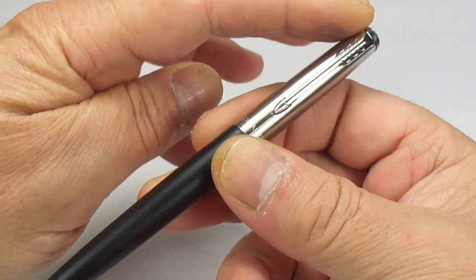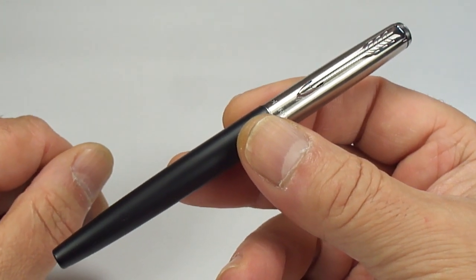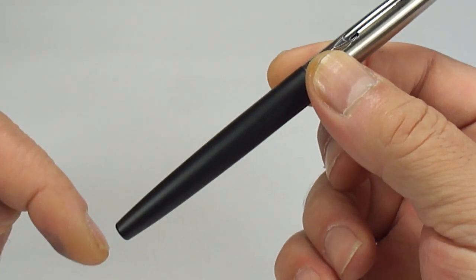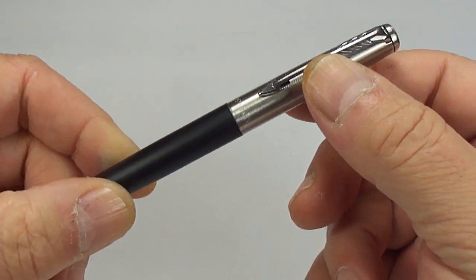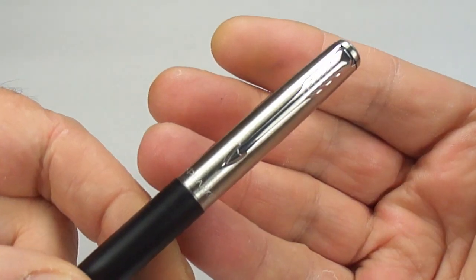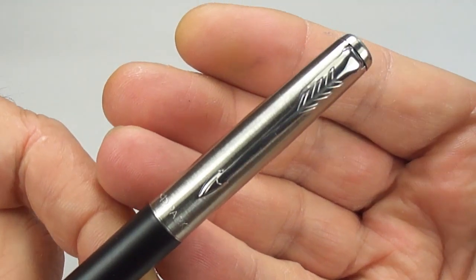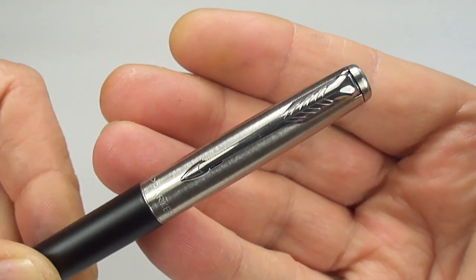The size of the pen from the top of the cap to the bottom around about 129 millimeters capped. The barrel slightly tapers but to the top here around about 11 millimeters in diameter. It has this stainless steel cap with a very recognizable Parker clip, feather clip to the top there.